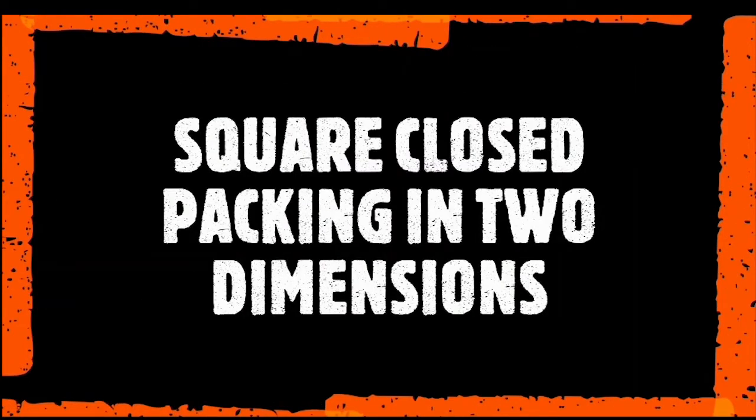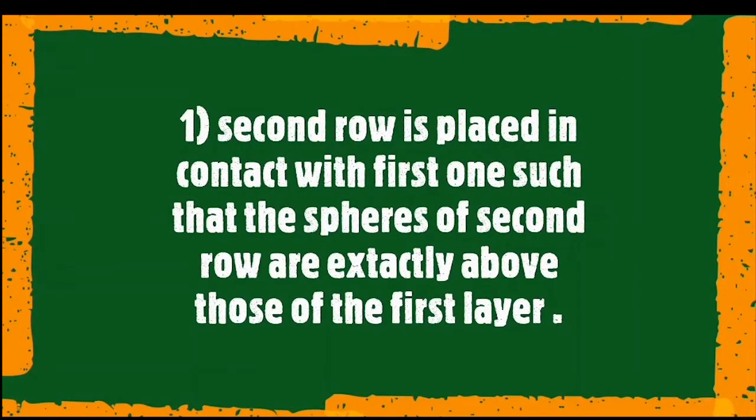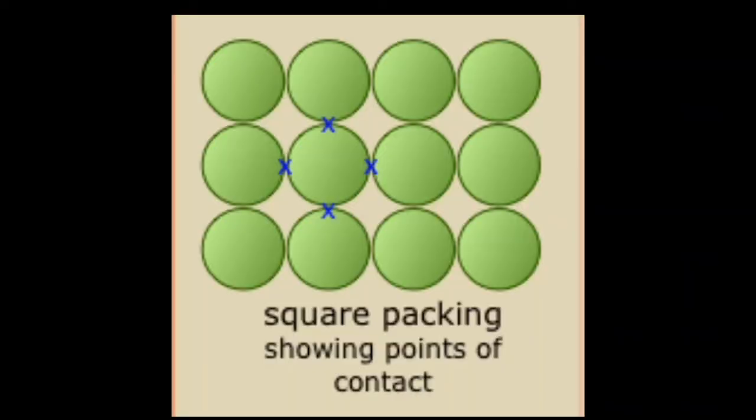Square-closed packing in two-dimension. The second row is placed in contact with the first row in such manner that the spheres of the second row are exactly above those of the first layer. In this figure, as you can see that the both rows are exactly in contact with each other.